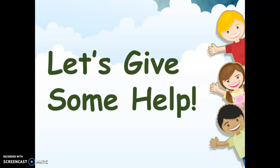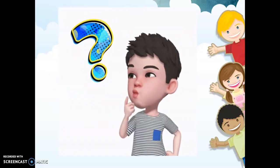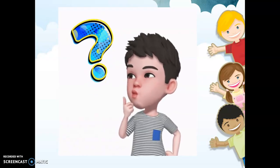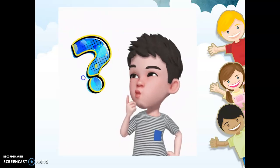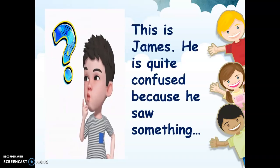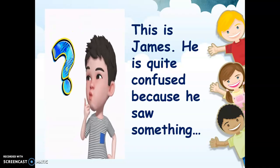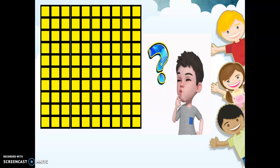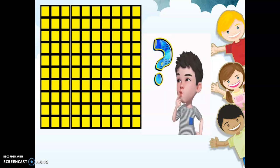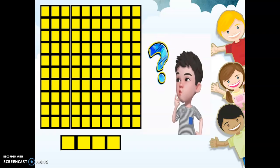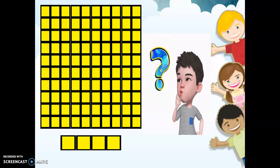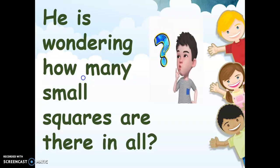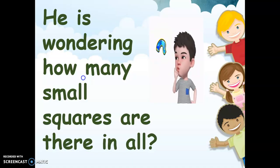So to start with, let's give some help. What do you think is happening to the boy in the picture? He's trying to find out something — he's thinking, maybe a little bit confused. Actually, children, this is James. He's quite confused because he saw something. Let's find out what he saw. He's wondering how many small squares there are in all, so he's trying to count the blocks in those squares.